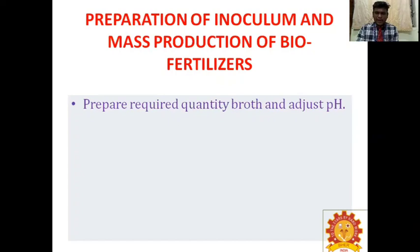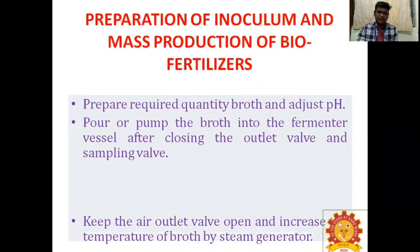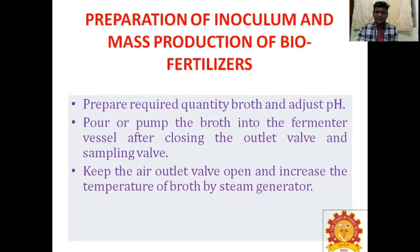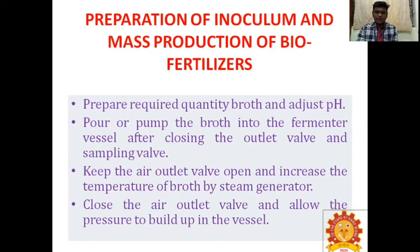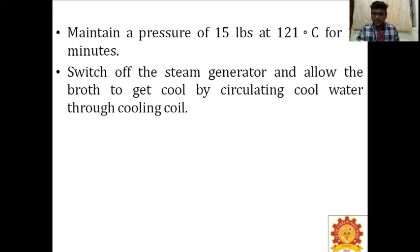Preparation of inoculum and mass production of biofertilizer: prepare the required quantity of broth and adjust the pH for that particular biofertilizer. Pour or pump the broth into the fermenter vessel after closing the outlet valve and sampling valve. Keep the air outlet valve open and increase the temperature of broth by steam generator. Close the air outlet valve and allow the pressure to build up in the vessel. Maintain a pressure of 15 lbs at 121°C for 20 minutes for sterilization — this follows moist heat sterilization, especially in an autoclave.